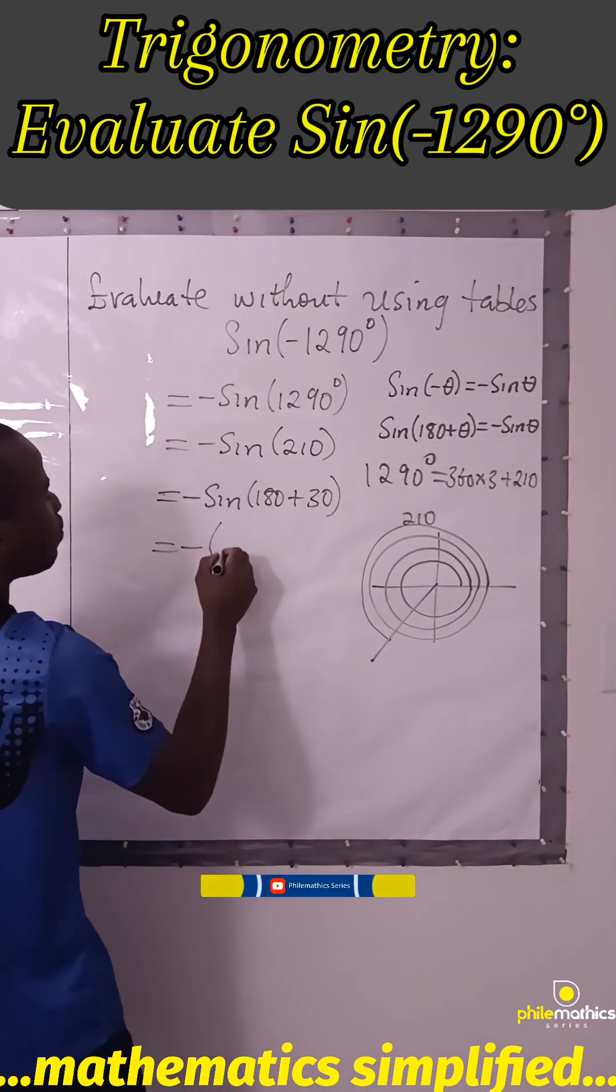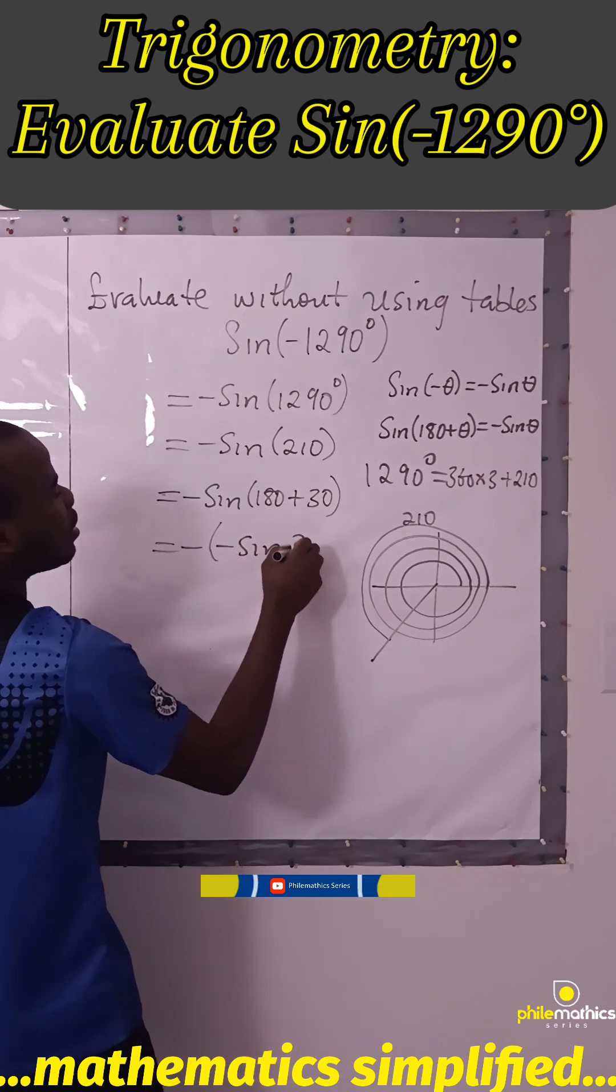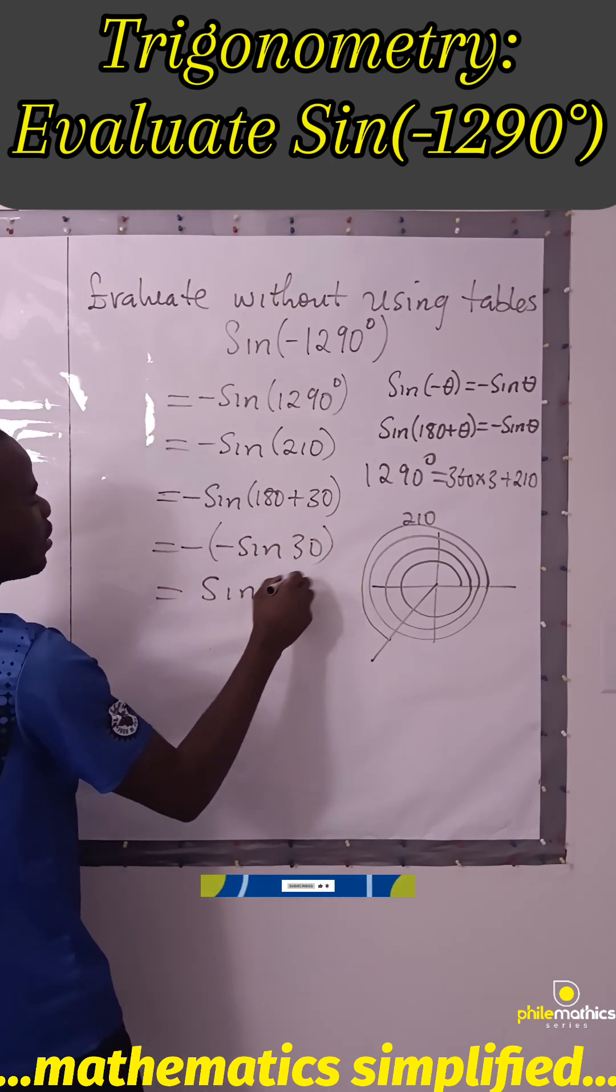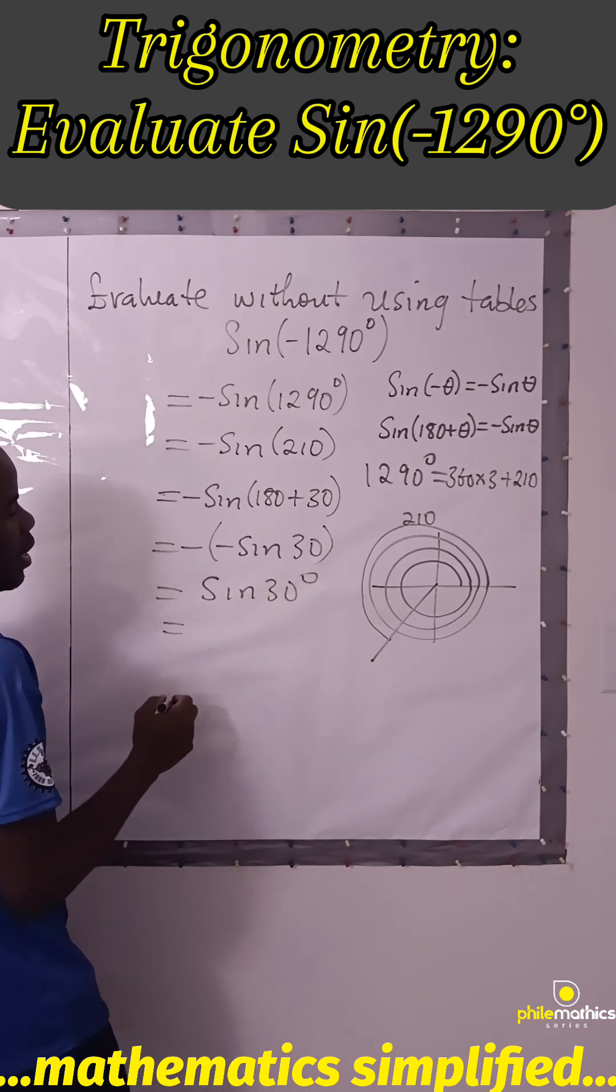-sin(30°), minus minus is plus, so this is sin(30°), and sin(30) is 1/2.